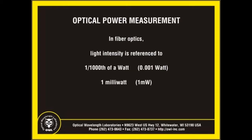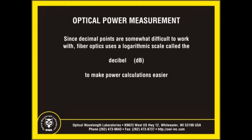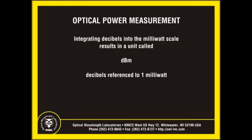The same goes for fiber optics, except the light intensities are referenced to one one-thousandth of a watt, or one milliwatt. Just as all light bulbs are compared to one watt, all fiber optic light sources are compared to one milliwatt. However, working with decimal points can be somewhat difficult, so fiber optics uses a logarithmic scale called the decibel, or dB, to make calculations easier to understand. When integrating decibels into the milliwatt scale, we end up with a measurement unit called dBm, which is also referred to as decibels referenced to one milliwatt.